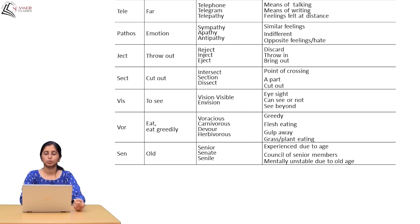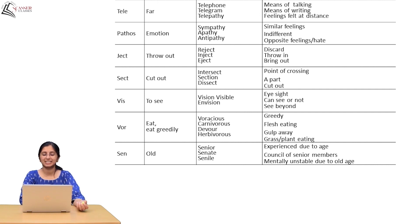The root 'vis' means to see — giving us vision, visible, and eyesight. The root 'vor' means eat greedily. So voracious means greedy. Carnivorous means flesh-eating. Devour means to gulp away. Herbivorous means grass or plant-eating.